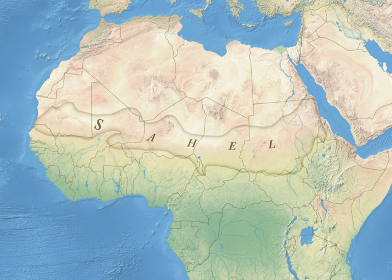Around 4000 BC, the climate of the Sahara and the Sahel started to become drier at an exceedingly fast pace. This climate change caused lakes and rivers to shrink rather significantly and caused increasing desertification. This, in turn, decreased the amount of land conducive to settlements and caused migrations of farming communities to the more humid climate of West Africa.